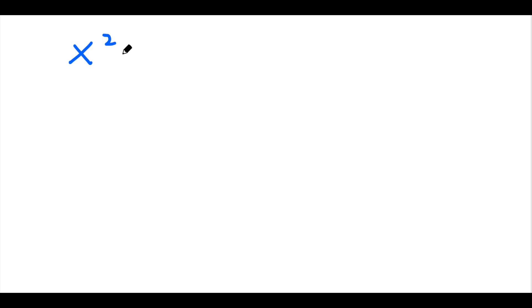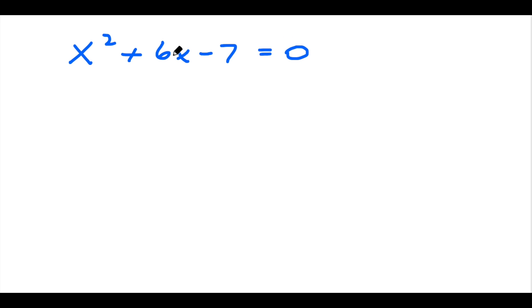In this video, we're going to talk about how to complete the square. So if you're given a quadratic like x squared plus 6x minus 7 equals 0, and you want to solve this equation by completing the square,